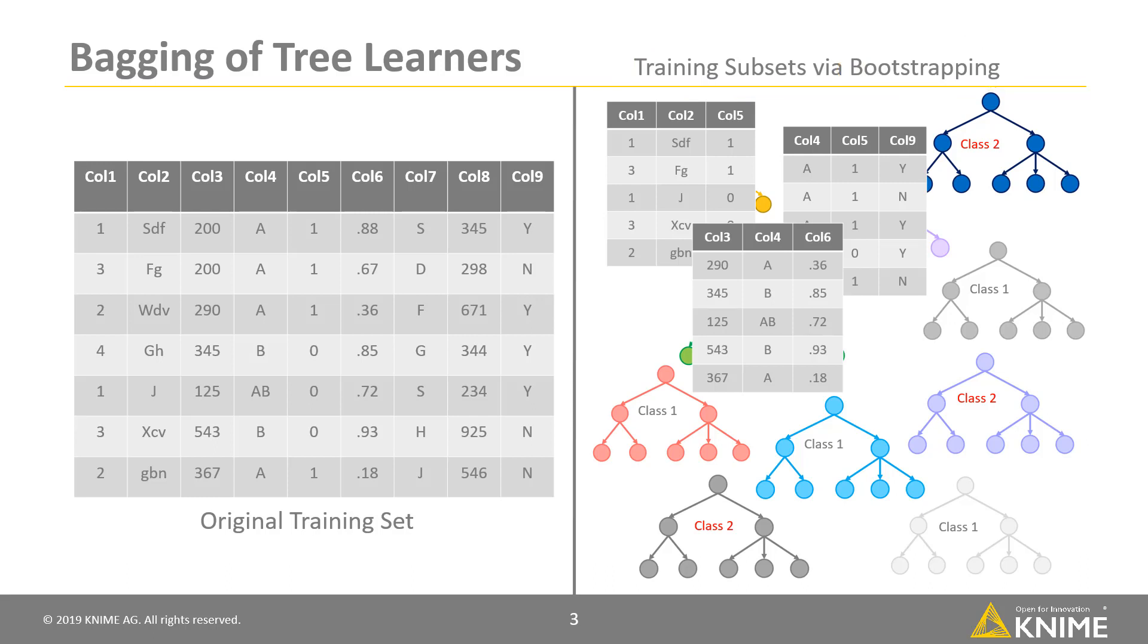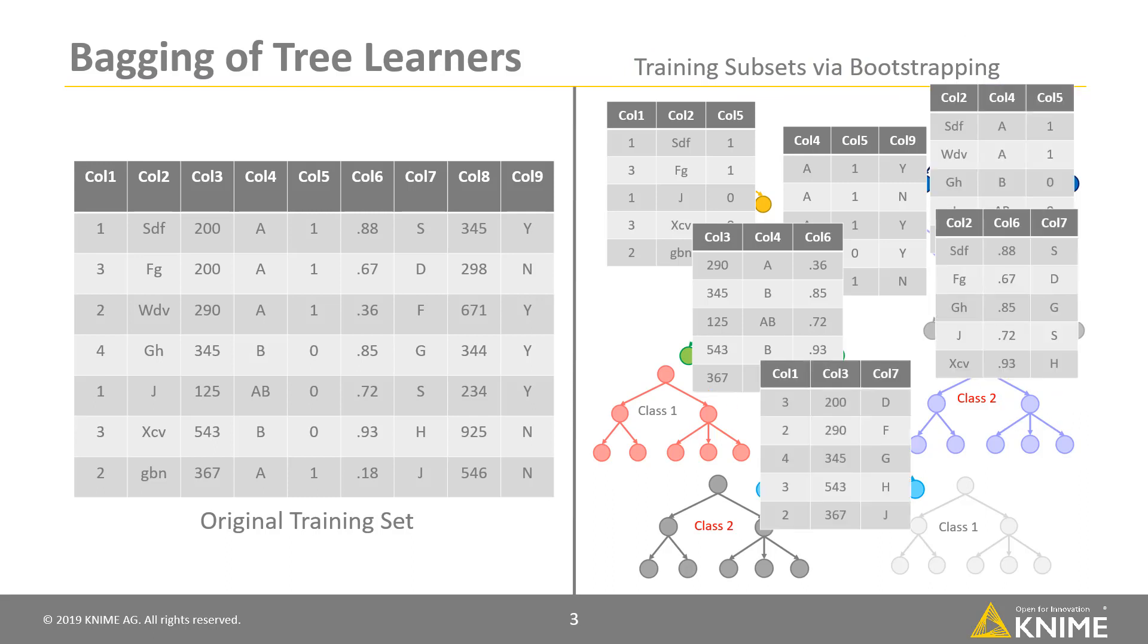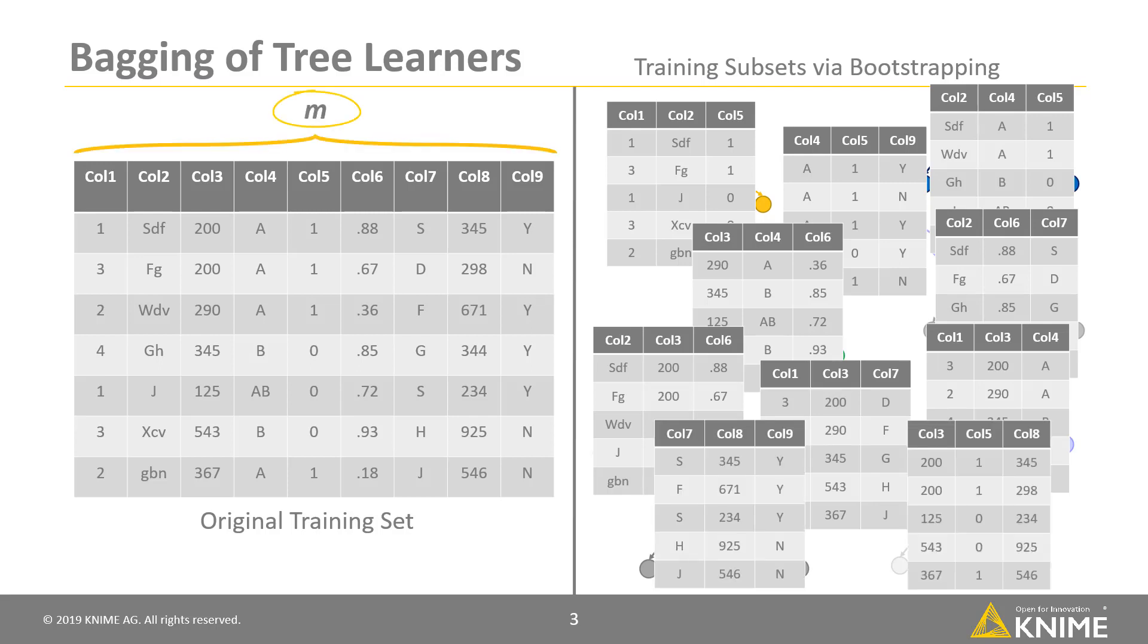Additionally, the input attributes can also be different from node to node inside each tree as a random subset of the original attribute set. Typically, if m is the number of original input features,